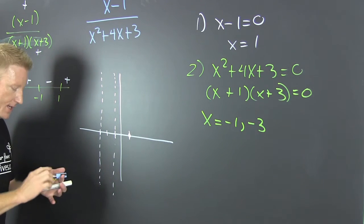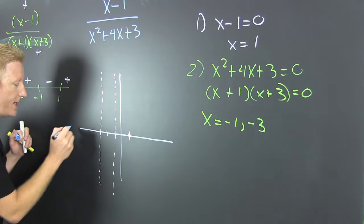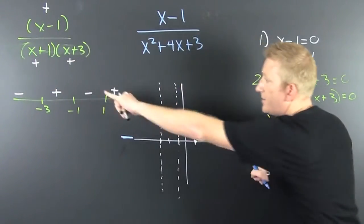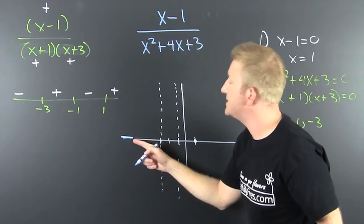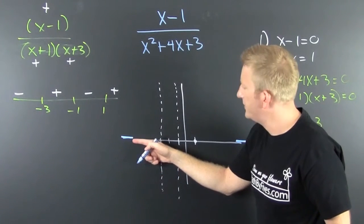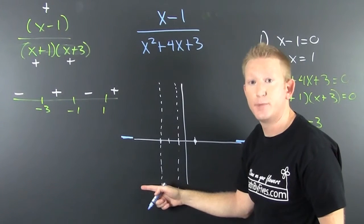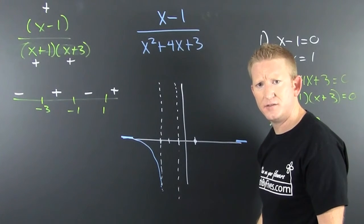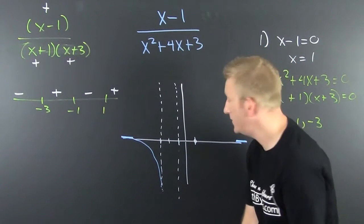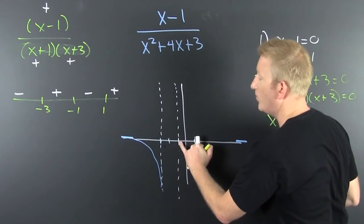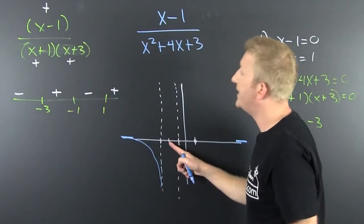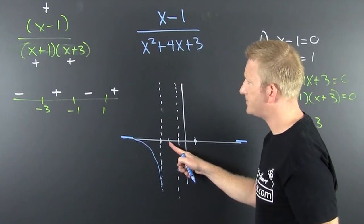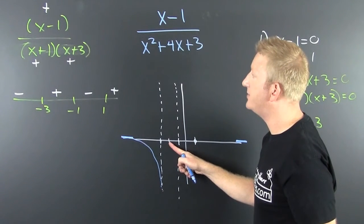The end behavior goes to 0. Now I look at my signs. To the left of -3, it's negative, so the graph goes below the x-axis there. Between -3 and -1, it's positive — I can check: putting -2 in gives -3 divided by (-1)(1), which is positive 3 halves — so the curve comes from positive infinity and goes back to positive infinity in that region.